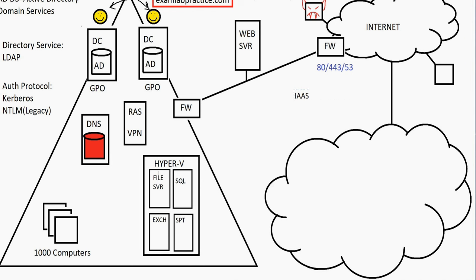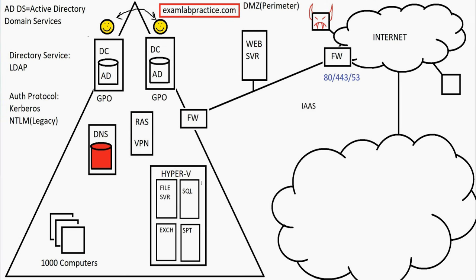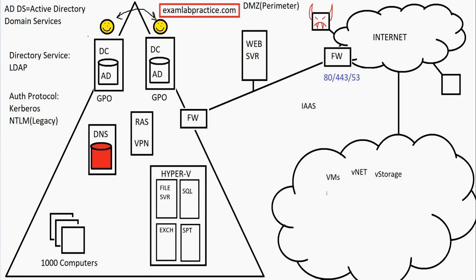Instead of hosting your own virtual machines on-premise, you can pay a cloud company to host them. They can host virtual machines, virtual networks, storage, virtual firewalls, virtual load balancers, apps, and virtual databases — essentially just about anything you could host on-premise can be hosted in the cloud. Amazon, Google, IBM, Intel, and Microsoft all offer this. Microsoft's IaaS cloud service is called Azure. You pay a fee for what you use every month — how much CPU, memory, storage, and network you consume.